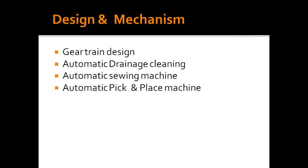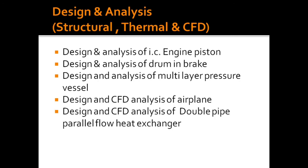Next one is design and mechanism. This is totally performed in software only. Examples include gear train design, automatic drainage cleaning, automatic sewing machine, and automatic pick and place machines. You can just open your final year or third year engineering books and take ideas, then design and complete your projects based on those.